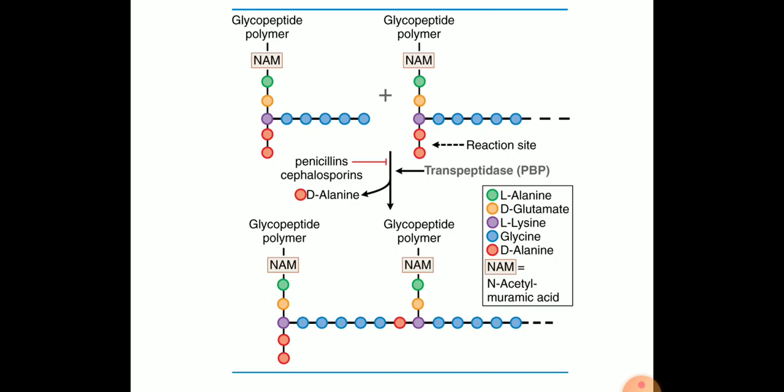In gram negative bacteria an outer membrane of lipopolysaccharide is located exterior to the few layers of peptidoglycan. In gram positive bacteria the lipopolysaccharide layer is missing and many more layers of peptidoglycan are present.